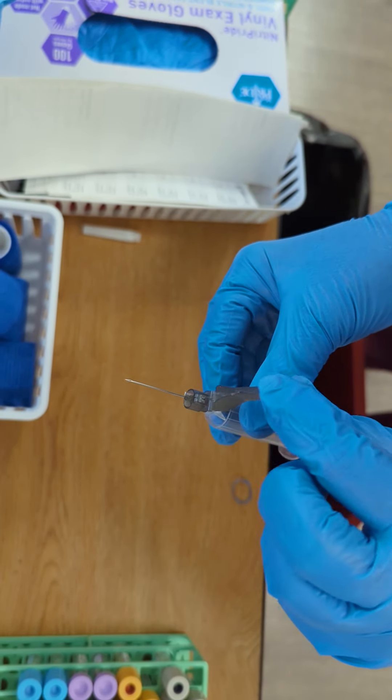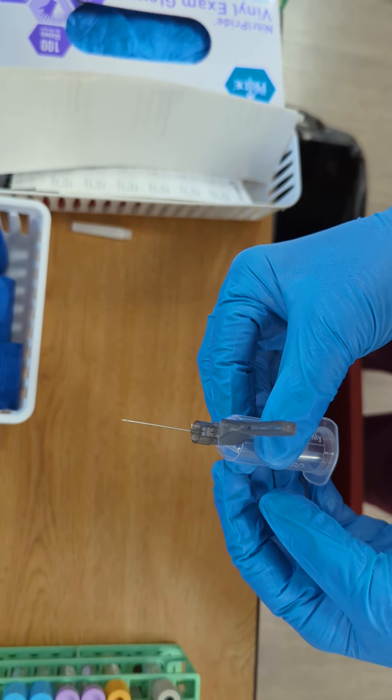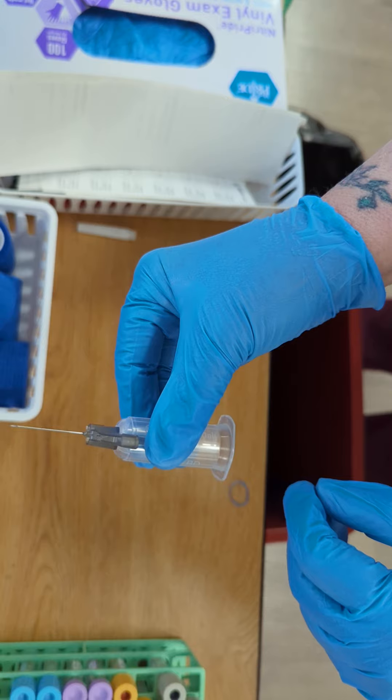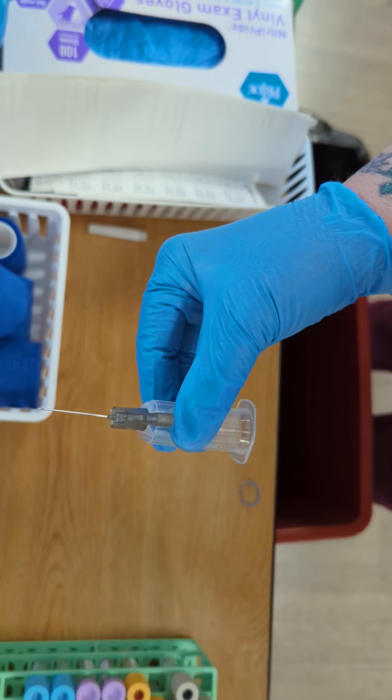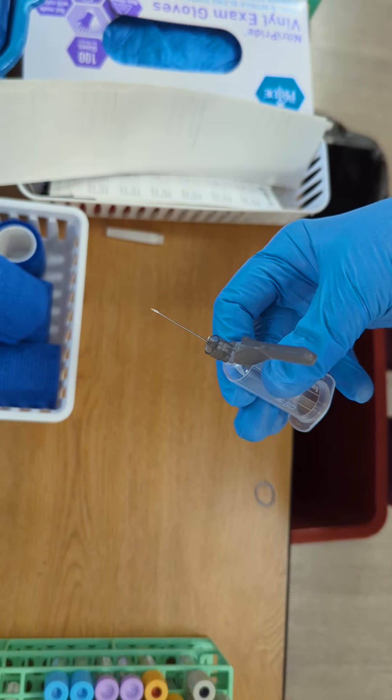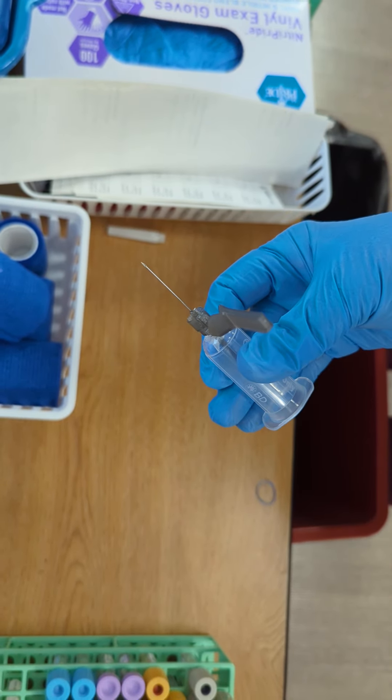So when the safety is facing upward, your bevel is also facing upward. You're going to insert the needle, fill your tubes, pop your tourniquet, apply the gauze, pull the needle, and then as soon as it's out of the arm, you're going to safety it.